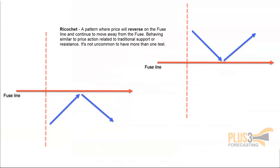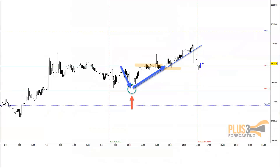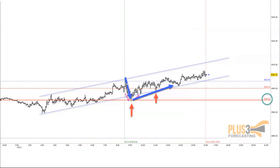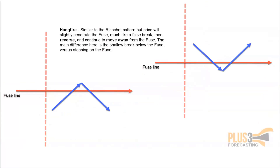The Ricochet is a simple pattern — easy to recognize. You stay on one side of the fuse, pull back to it, and go. Coming into the open here, we're above the fuse, pull back to it, go. You might call it a fuse line; others call it pivot points — it acts the same way. You also have to know where you are in the bigger picture, so we constantly reference the 30-minute, hourly, four-hour, and daily charts. You can't get so zoomed in on a four-minute chart that you lose context.